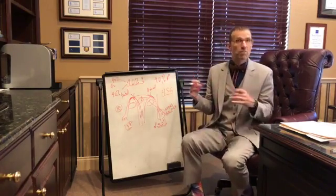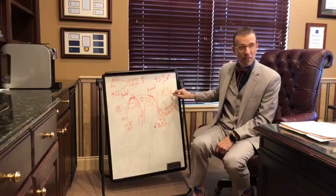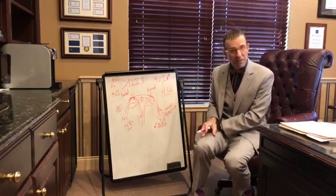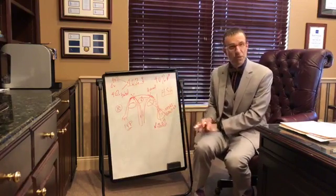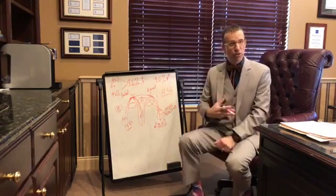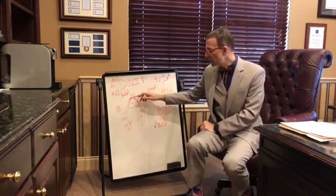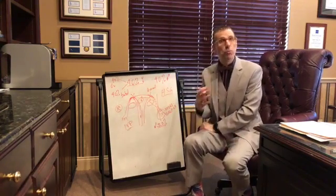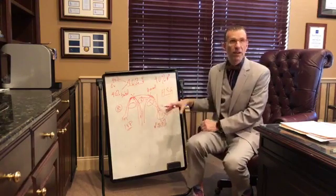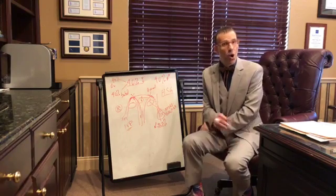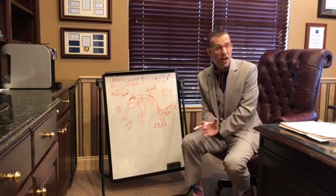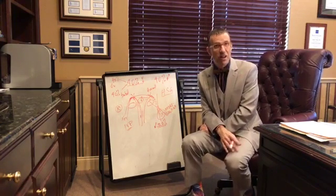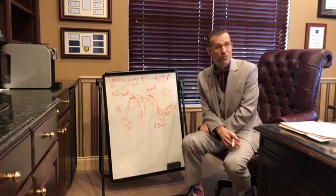To summarize: check the fallopian tubes with an HSG right in the office. If the tube is blocked at the end and swollen, that's a hydrosalpinx — it reduces success by 50%, and the easiest solution is to remove it by one-day laparoscopic surgery. If it's blocked at the beginning, you can do a minor procedure to open the tubes with a guide wire called tubal cannulation. If both tubes are bad, in vitro fertilization is the option. Hope that was helpful. Please leave comments on topics you'd like to hear about — we love the feedback. Have a fantastic week and we'll see you next time.